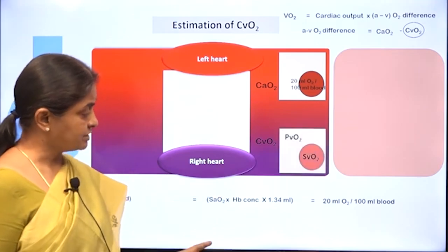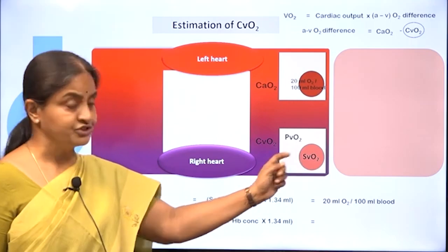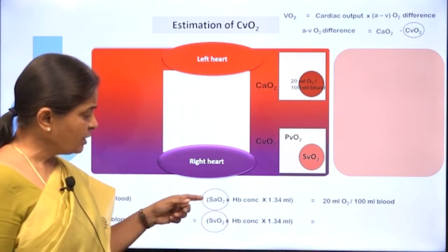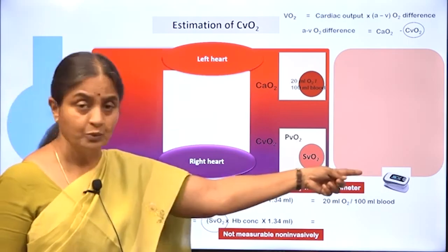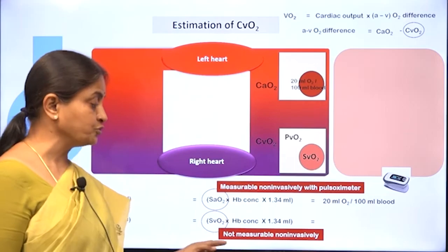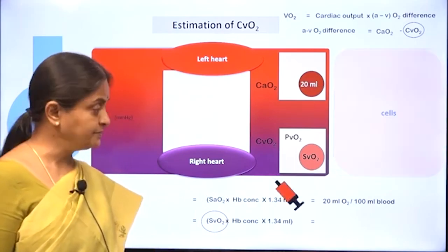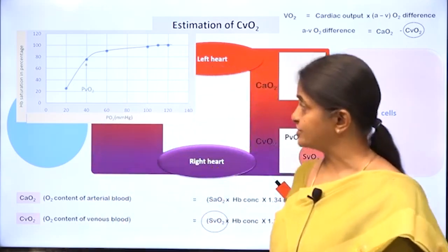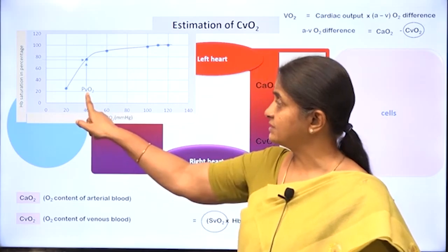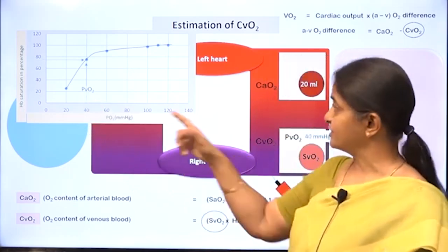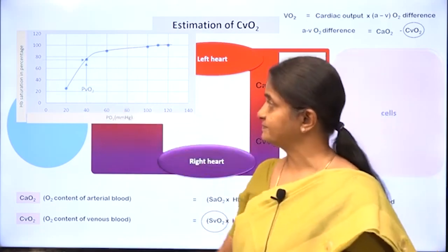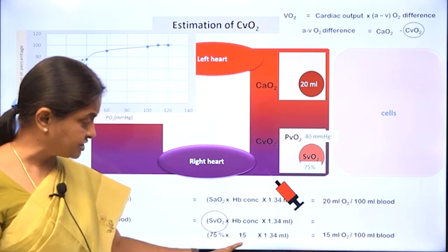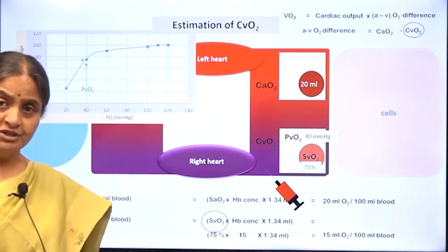Similarly, for venous oxygen content, we only consider oxygen carried in hemoglobin. SaO2 is measurable non-invasively with a pulse oximeter, but SvO2 is not — you must take a venous blood sample, estimate the partial pressure of oxygen, then use the oxygen-hemoglobin dissociation curve to find saturation at that PO2. If PO2 is 40 mmHg, oxygen saturation is about 75 percent, giving a venous oxygen content of 15 milliliters per 100 ml of blood.